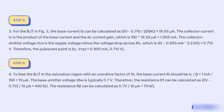Four, to bias the BJT in the saturation region with an overdrive factor of 10, the base current IB should be IC / β equal to 1mA / 100 equal to 10μA. The base-emitter voltage VBE is typically 0.7V. Therefore, the resistance R1 can be calculated as (5V minus 0.7V) / 10μA equal to 430kΩ. The resistance R2 can be calculated as 0.7V / 10μA equal to 70kΩ.